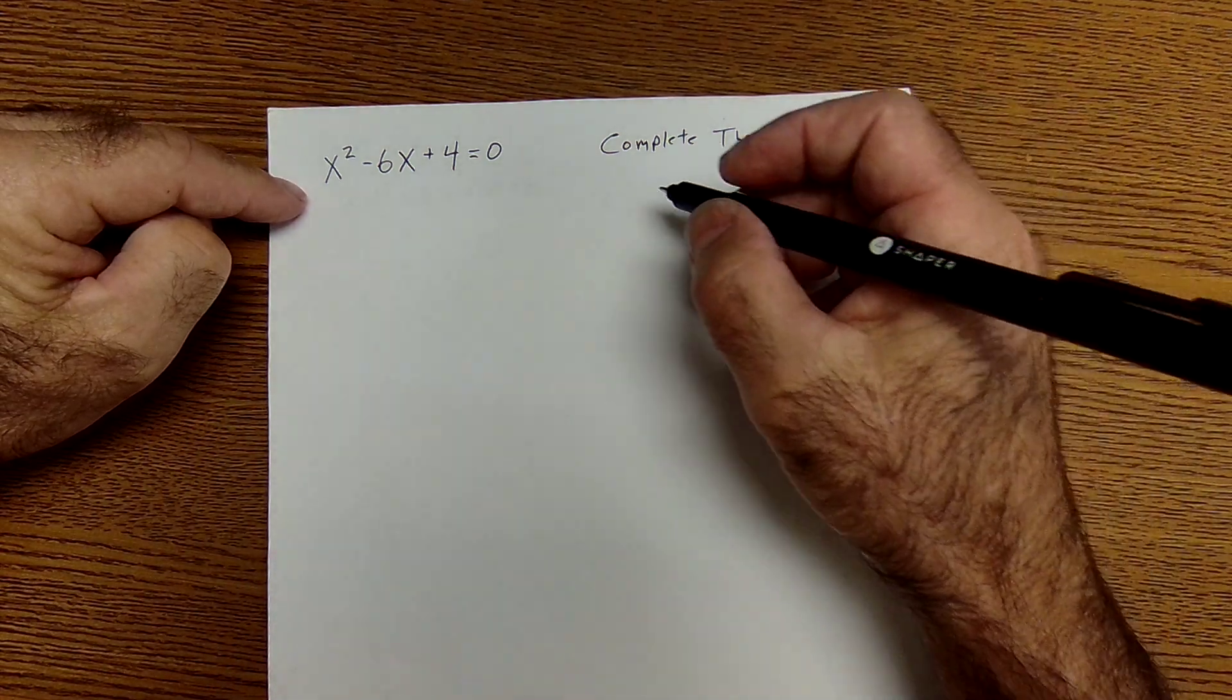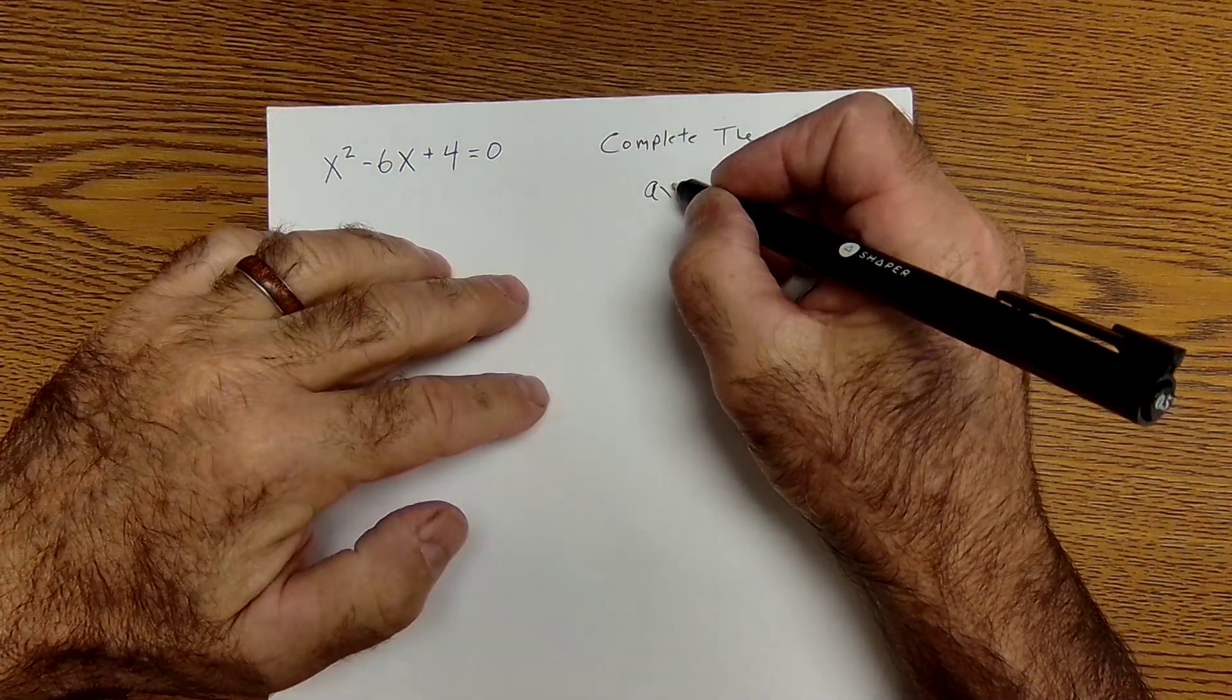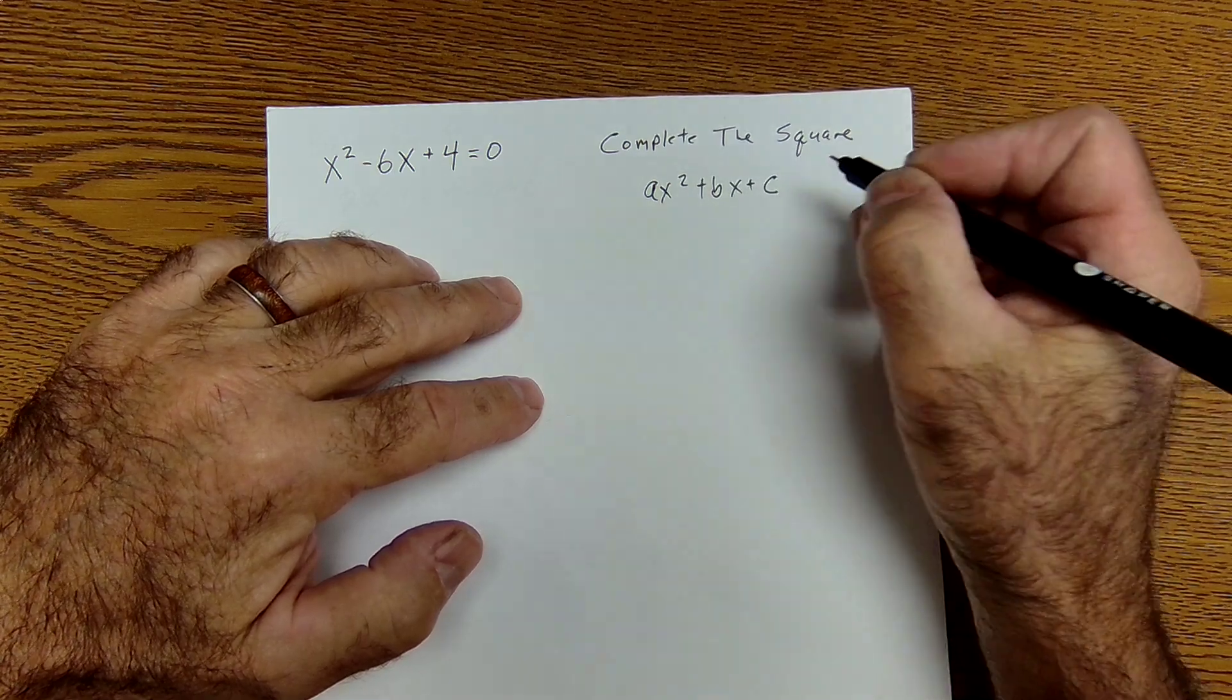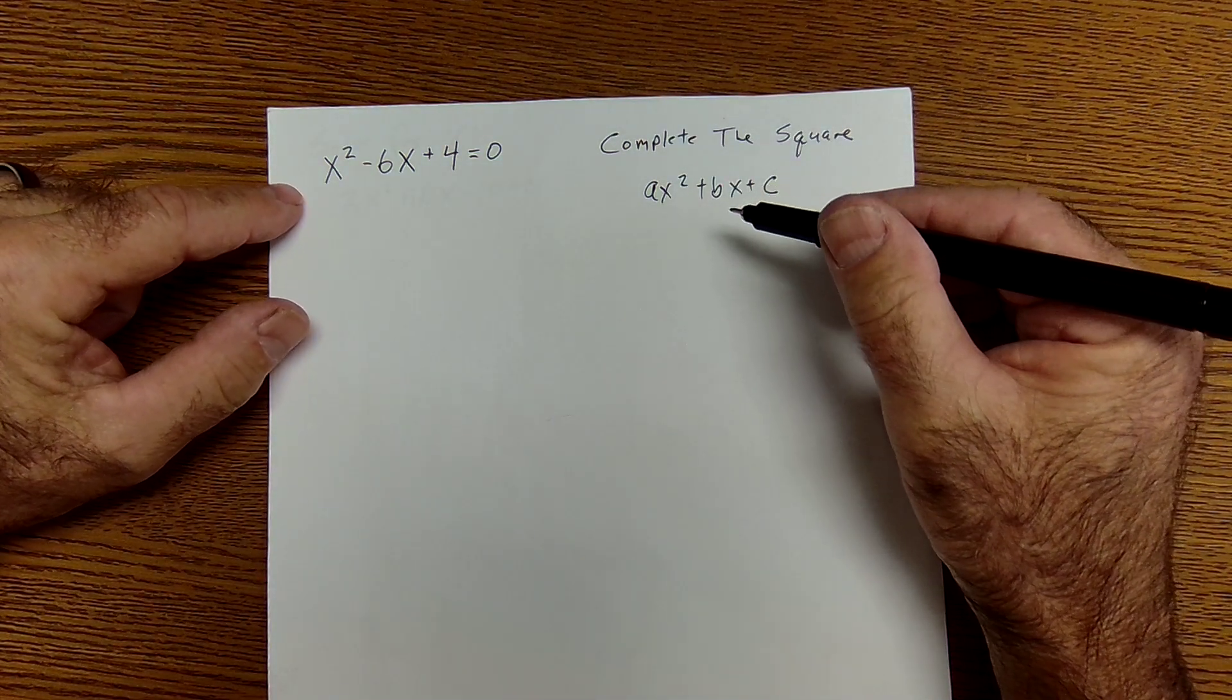I have a quadratic here. The general form is AX squared plus BX plus C. First thing you always want to do is see if you could factor that.